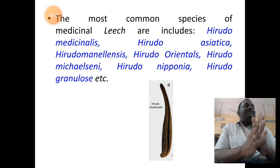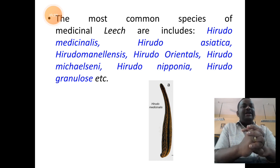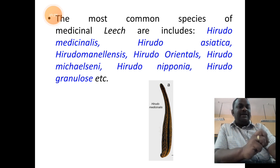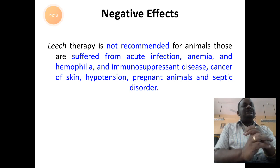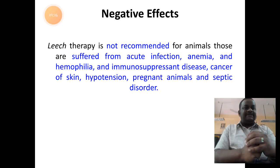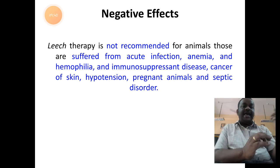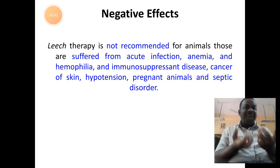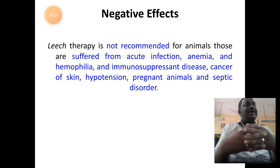There are many species of leeches — around 15 species are used in the medicinal field, and Hirudo medicinalis is the widely used species. The negative effects of leech therapy: leech therapy is not recommended if individuals are suffering from infections and infectious diseases, anemic individuals, hemophilic individuals, those with immunosuppressive disease, skin cancer, hypertension, high BP, or pregnant organisms. Such individuals are not recommended for leech therapy.